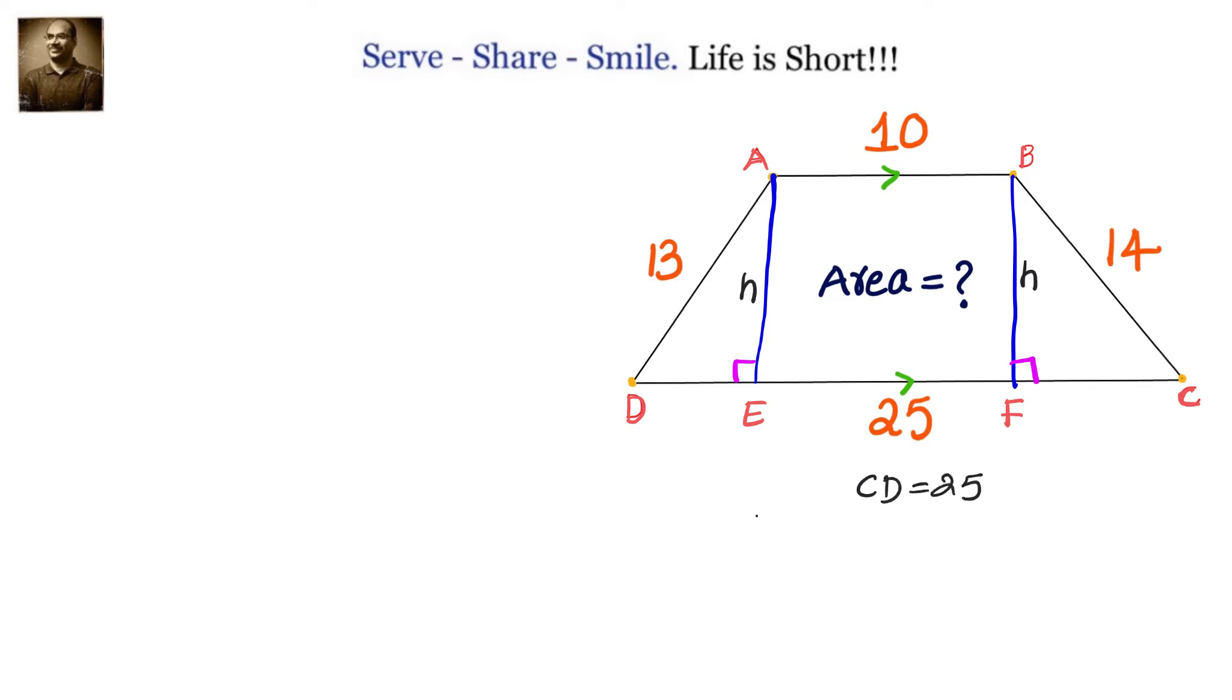Let us say they are AE and BF. Now we have two right angle triangles: one is triangle ADE and another is triangle BCF. We have AB given as 10 and CD equals to 25. Now that 25 we are going to divide into three parts: we will take DE as x, then CF will become 15 minus x, so that CD will be again back to 25.